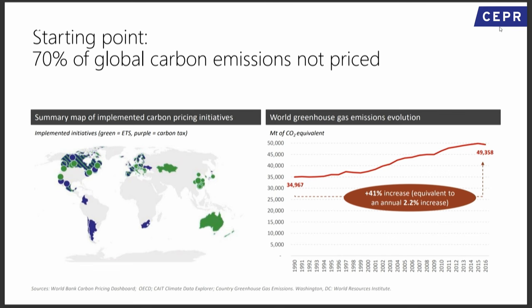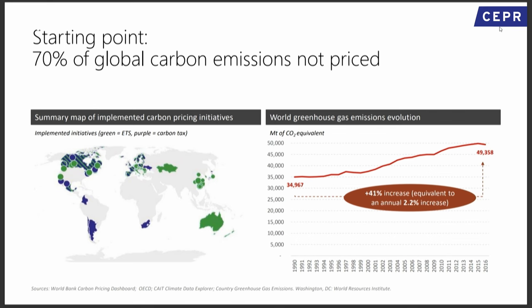The starting point — and the reason this is politically popular — is that most of the world is not pricing carbon emissions. 70% of global carbon emissions are not priced. Emissions have been increasing, and it's the rest of the world who is responsible for that increase. Not only is carbon pricing the exception, but even where it exists, the prices are very low.